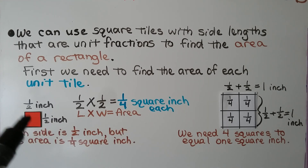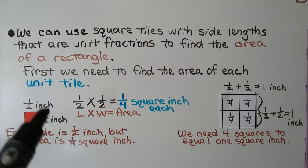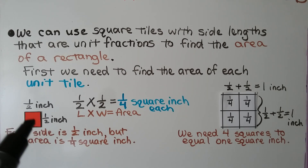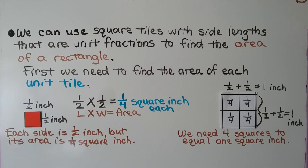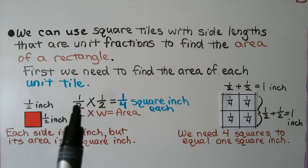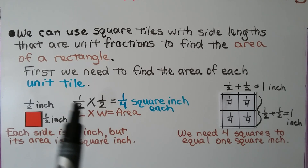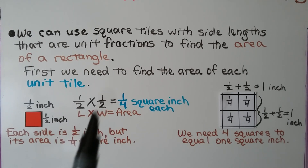That means the area of this little square, even though it measures one half this way and one half this way, its area is one fourth square inch. Each side is a half inch, but its area is one fourth square inch when we multiply the side times the side.